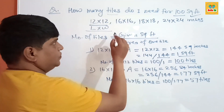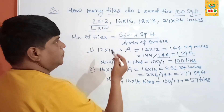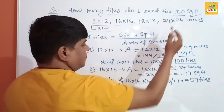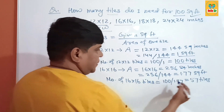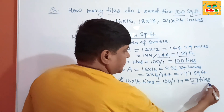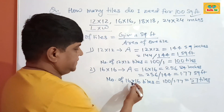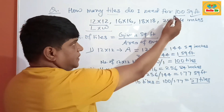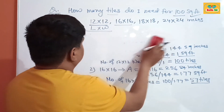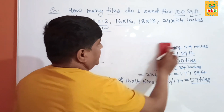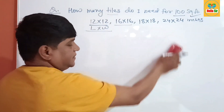If you choose 16 by 16 inch tiles for your project to cover 100 square feet, you will need 57 tiles of 16 by 16 inches.